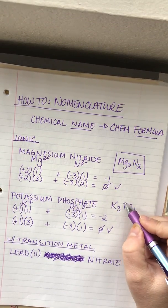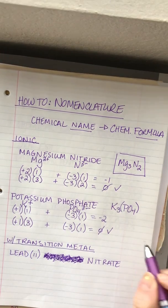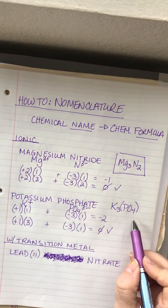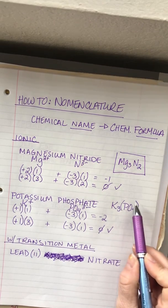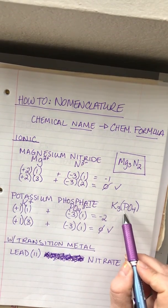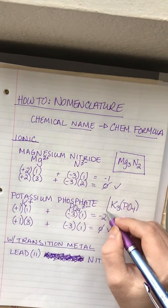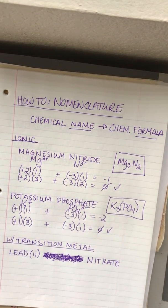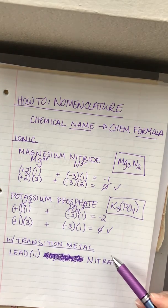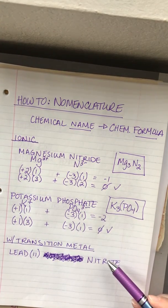So we write K₃PO₄. Remember, when the subscript is 1 we don't write it. Some students like to put parentheses around the polyatomic ion to indicate it stays together as one unit. That is the chemical formula for potassium phosphate.